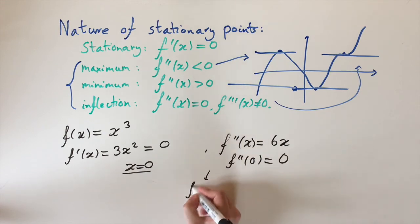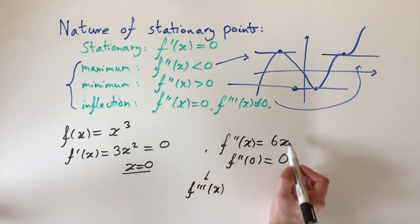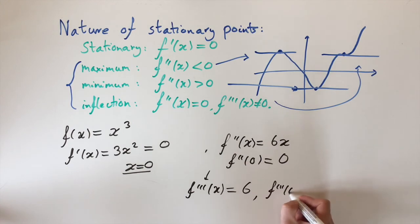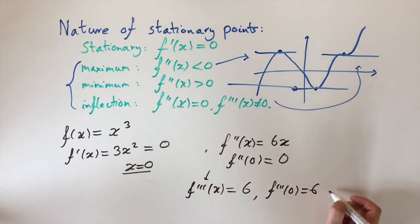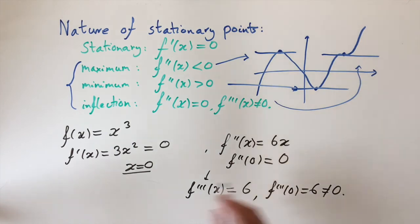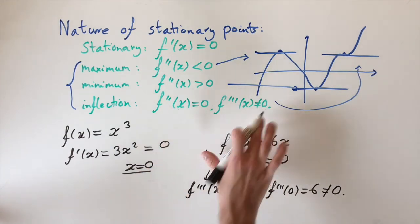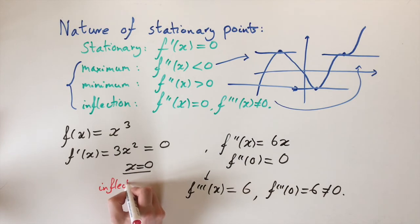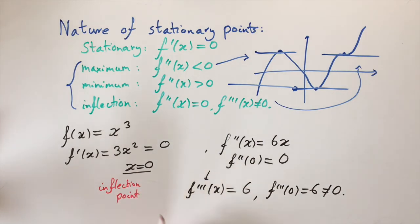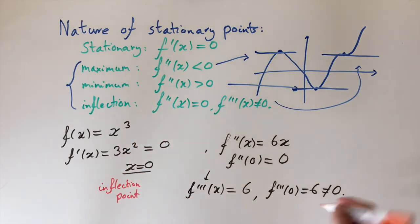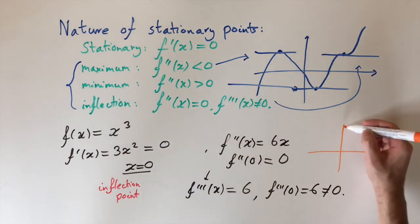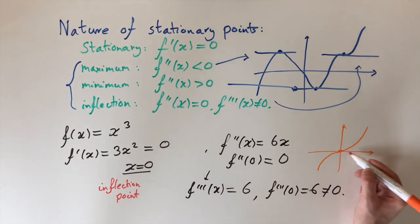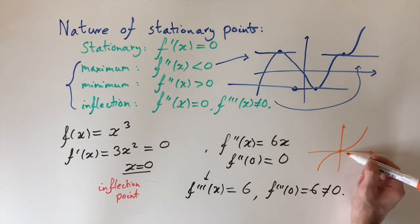So f‴(x) — just differentiate 6x — and we get 6, which is a constant. So if we put in 0 or any point, we're just going to get 6. This is important because it is non-zero. So we've satisfied all the conditions for this point to be an inflection point — this tells us this is an inflection point. This is actually quite a famous function. It looks something like this [sketch]. The inflection point happens at x = 0, and we see it's not a maximum or a minimum, but it is a point where the derivative equals zero.